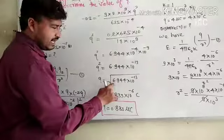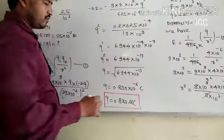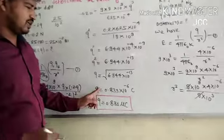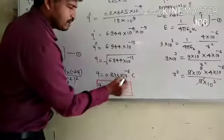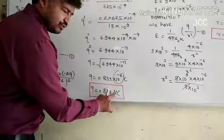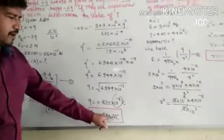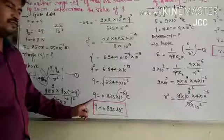Square root is 6.9444, square root we get 0.833 into 10 raise to minus 6 coulomb. Minus 6 coulomb will be micro coulomb, so Q equal to 0.833 micro coulomb. This is the value of charge.